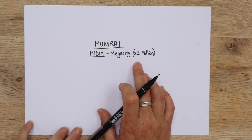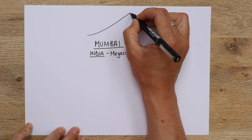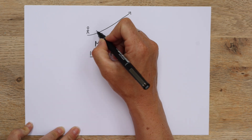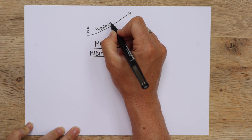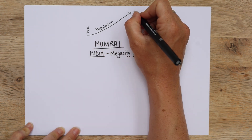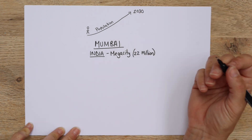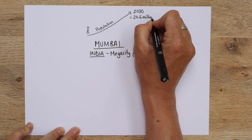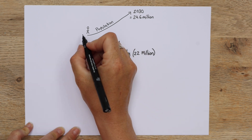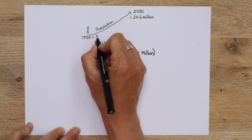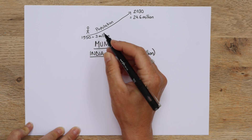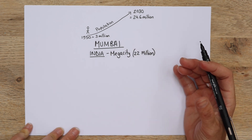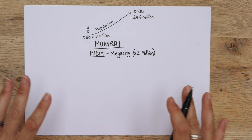Mumbai is currently at 22 million, but that number is just going up and up. The population is increasing, and by 2030 it's expected to be 24.6 million. You can see it's increasing fairly rapidly. It never used to be that big — in 1950 it was only 3 million. Obviously it's gone up huge amounts in a really quite small space of time, and that's put a huge amount of pressure on the whole area.